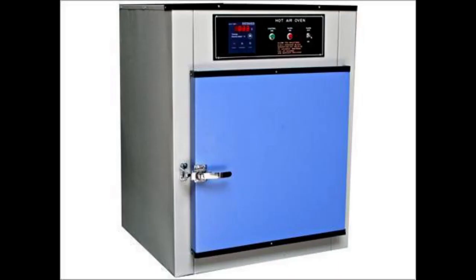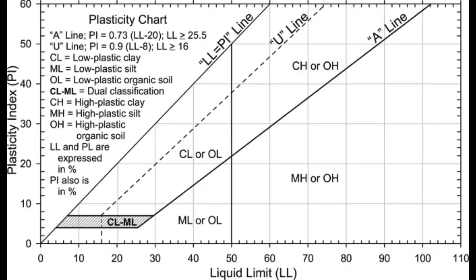Calculation for Plastic Limit: Compute the average of the two water contents (trial plastic limits) and round to the nearest whole number. This value is the Plastic Limit. Repeat the test if the difference between the two trial plastic limits is greater than the acceptable range listed for single operator results. Calculate the Plasticity Index (P.I.) by subtracting the Plastic Limit from the Liquid Limit. Thank you for watching this video and please help to subscribe to our channel.